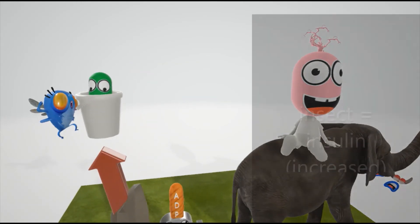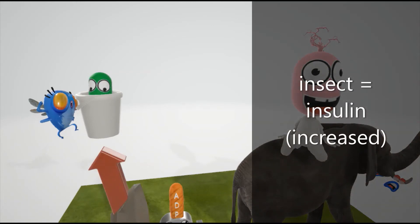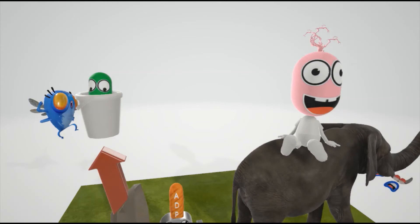This insect in our videos represents insulin. Insect for insulin because insulin is also increased due to the interrupted signaling. And when insulin is increased, it leads to things like hypoglycemia because there's not going to be enough sugar in the blood.